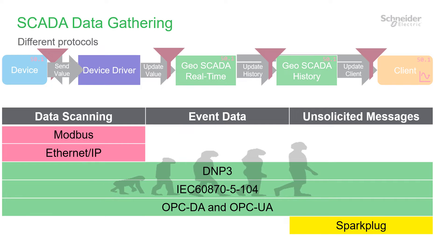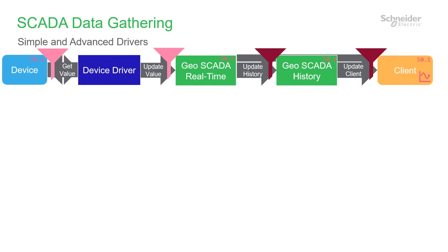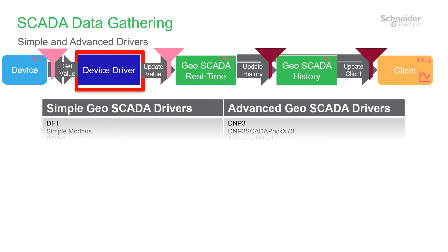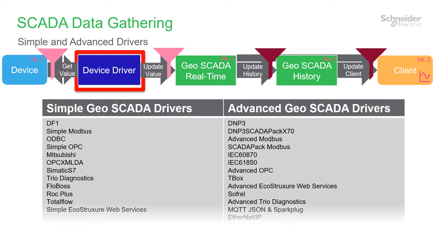That'll be the subject of some future videos. Let's look at the filtering capabilities in GeoScada and show you how to set it up, starting with the configuration of driver features. I'll include some common driver features here and point out the fundamentals. In GeoScada, there's a type of driver we call simple, covering Modbus, OPC and some PLC types. There's also a type called advanced, covering Modbus, OPC and protocols like DNP3. These two driver types work a bit differently from each other, so I'll try and highlight that as we go on.